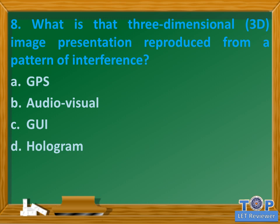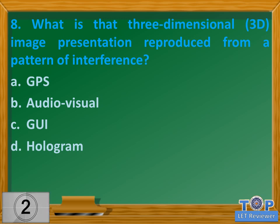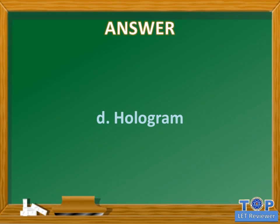Question number eight: What is that three-dimensional 3D image presentation reproduced from a pattern of interference? A. GPS. B. Audio visual. C. GUI. D. Hologram. Answer: D. Hologram.